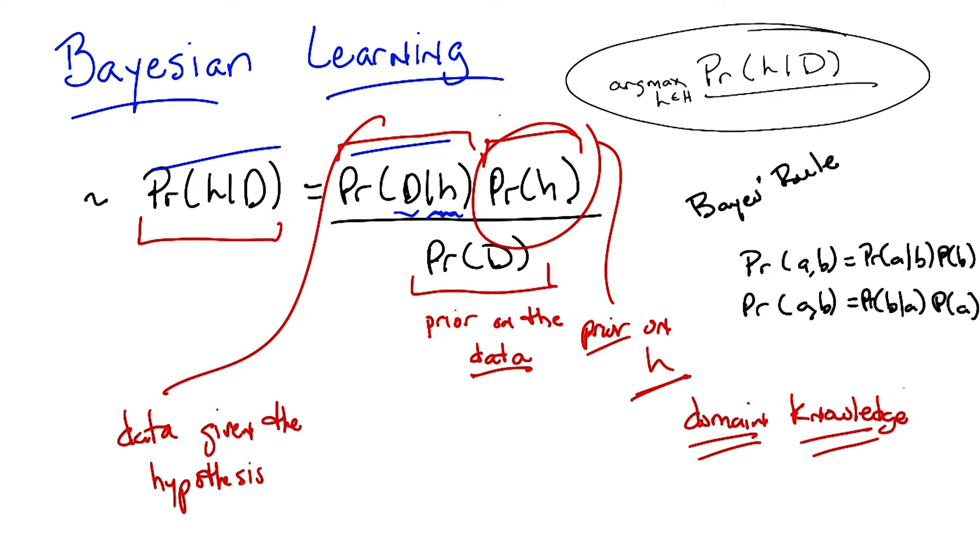So in fact, when you use something like Euclidean distance in KNN, what you're saying is, well, points that are closer together ought to have similar labels. And so we would believe any hypothesis that puts points that are physically close to one another to have similar outputs are more likely than ones that put points that are very close together to have different outputs.